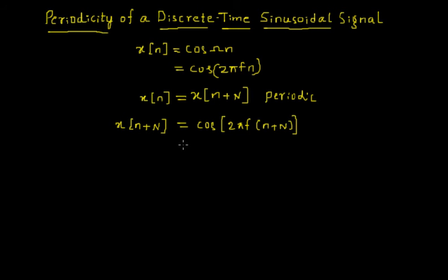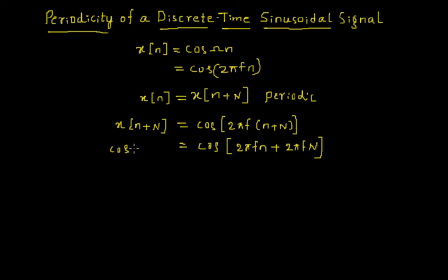X(n + N) is equal to cos(2πf·(n + N)). Taking 2πf inside the bracket, we get cos(2πf·n + 2πf·N). For this signal to equal the original signal cos(2πf·n), this condition must be satisfied.